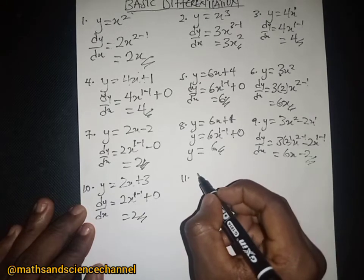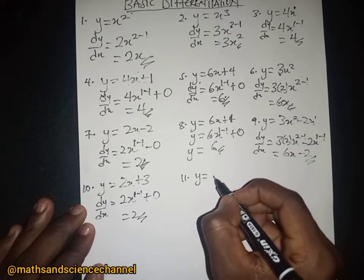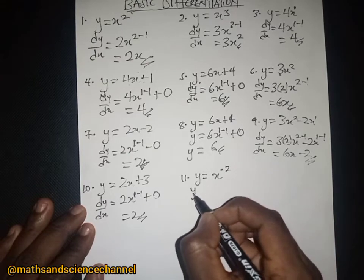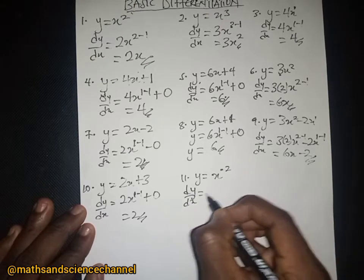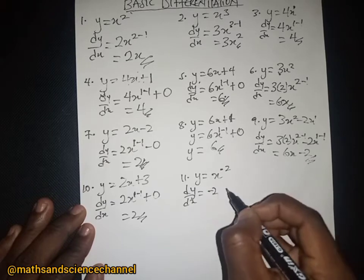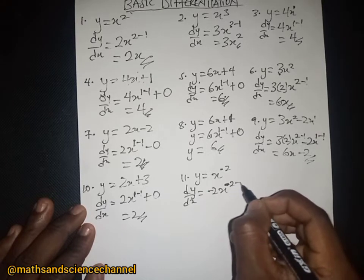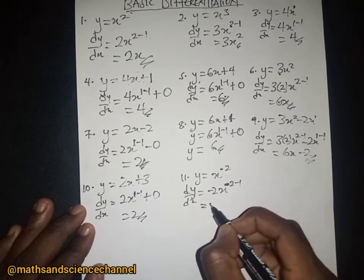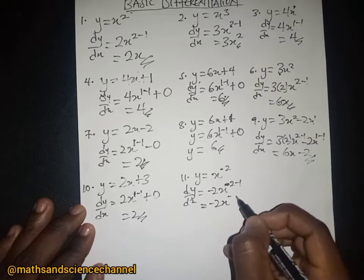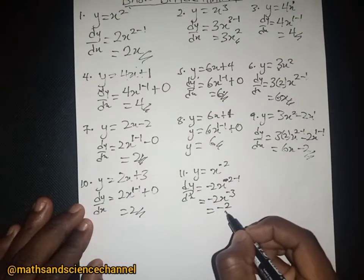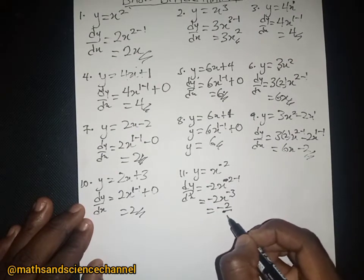Let's take y equal to x to the power negative 2. The dy/dx will be equal to — we drop the exponent and subtract 1 from it — and we just have negative 2x to the power negative 3, which can be written as negative 2 divided by x cubed.